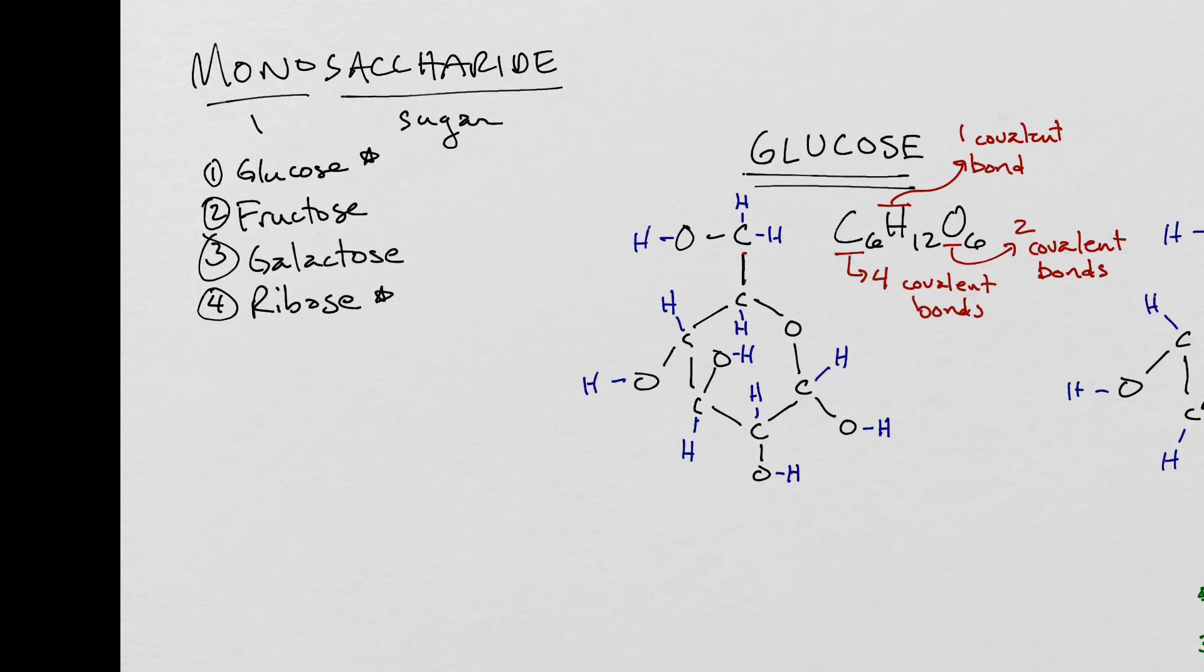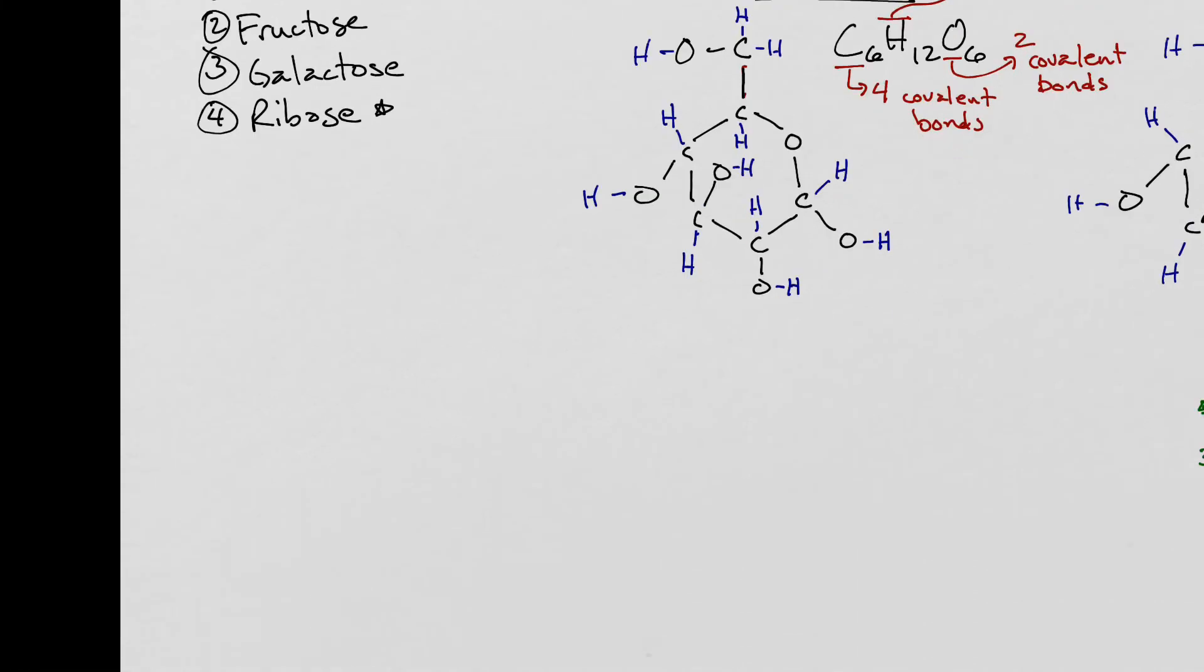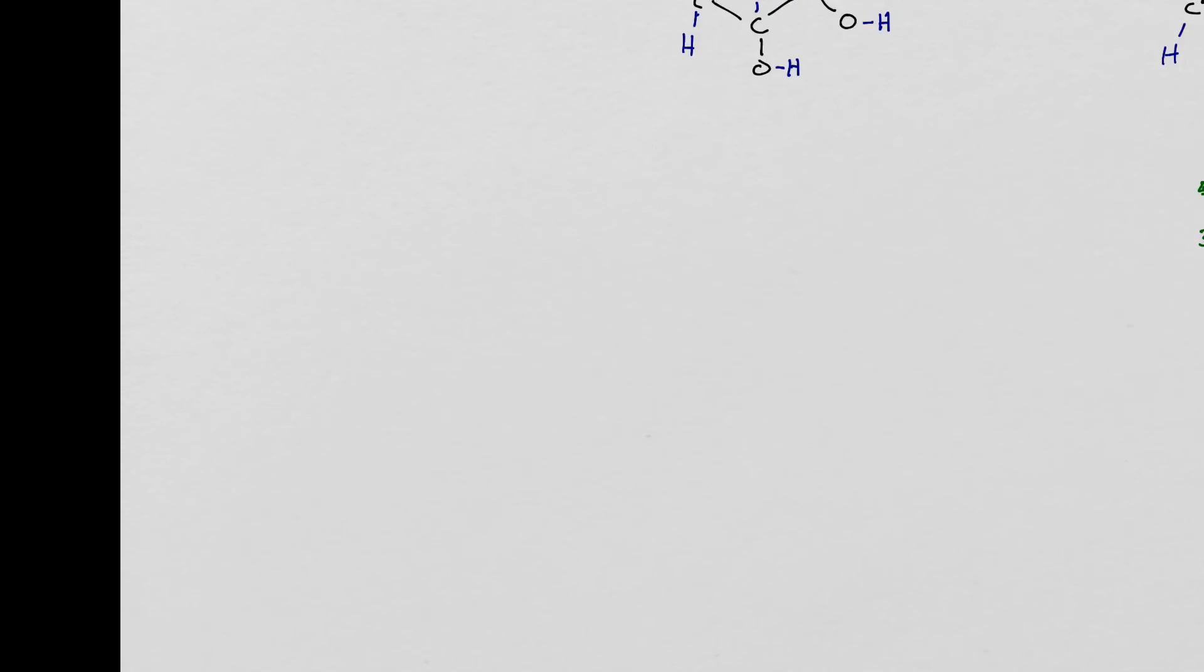There's four monosaccharides. There's glucose, fructose, galactose, and ribose. And just like we are talking about, we can combine these molecules to form bigger molecules.